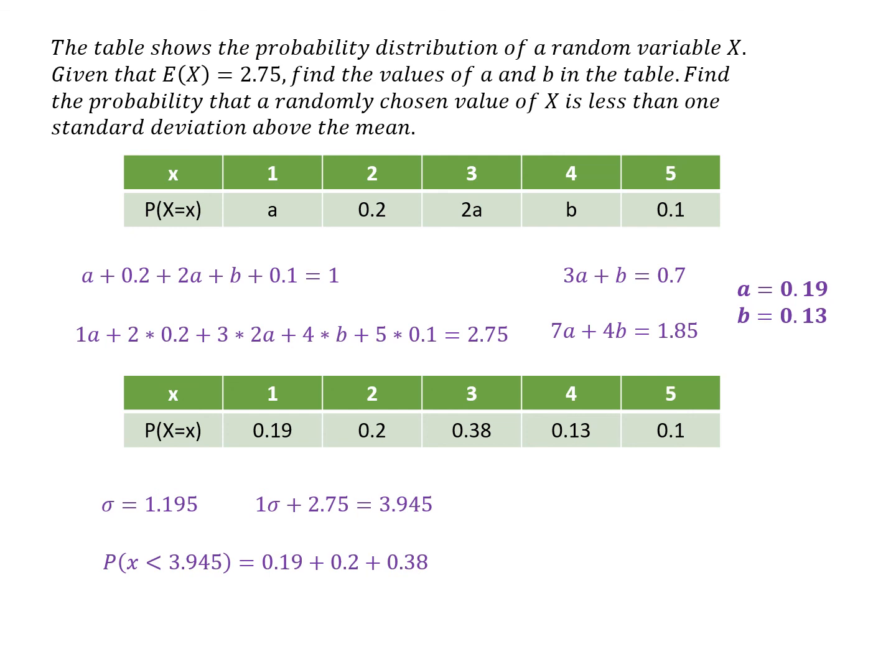So we add up 0.19, 0.2, and 0.38, because these values of X are less than 3.945. And the final answer is 0.77. So that's the answer to that question.